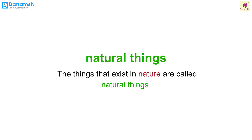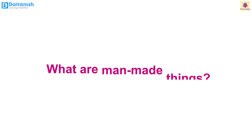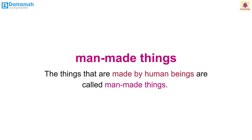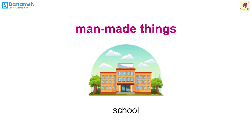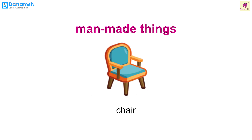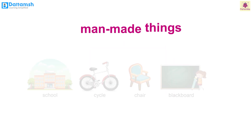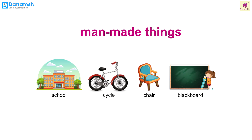Then what are man-made things? The things that are made by human beings are called man-made things. For example, your school, your cycle, chair, blackboard — these things are made by humans, hence we call them man-made things.